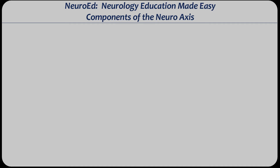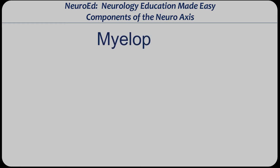So what is a spinal cord pathology called? Hopefully you guys have read and done a little bit of homework prior to starting the video, because now this gets a little tough if you haven't read. It is called a myelopathy. Do not confuse this with myopathy. It's myelopathy — M-Y-E-L-O — myelopathy.